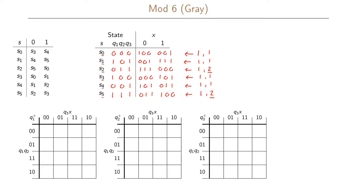Now let us write this as our Karnaugh maps. We again have three Karnaugh maps, each four-by-four because we have four variables: Q1, Q2, Q3, and x. We have one Karnaugh map each for Q1+, Q2+, and Q3+. For state 000 with input 0 we go to 100; with input 1 we go to 001.